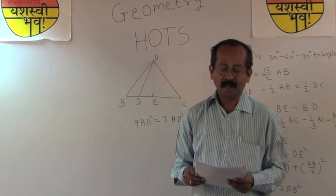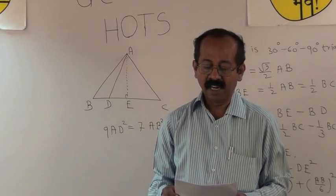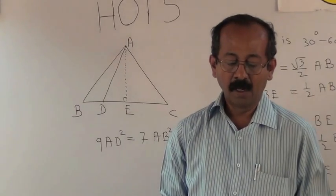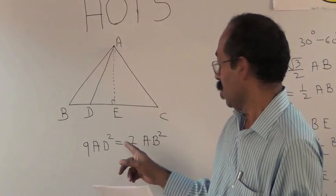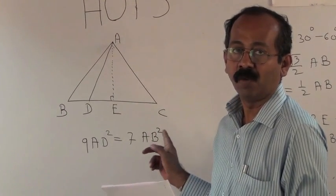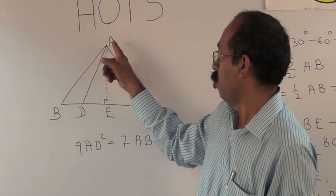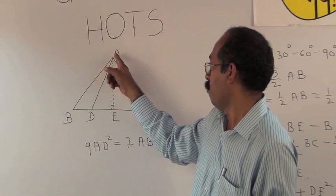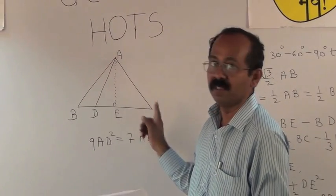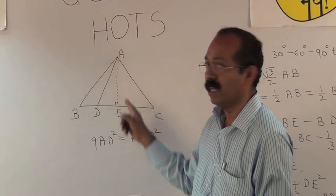In an equilateral triangle ABC, the side BC is trisected at D. Prove that 9AD² = 7AB². For solving this problem, we have to do the construction, and that is we have to draw a perpendicular from point A on base BC, so that perpendicular is AE.